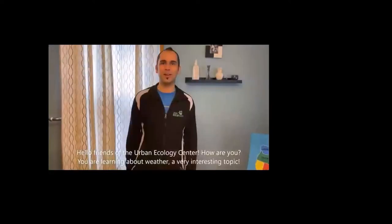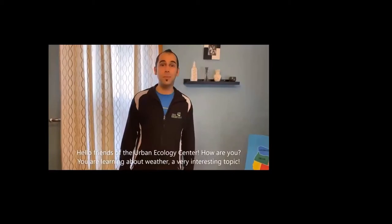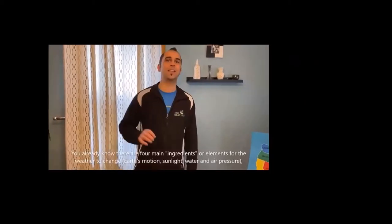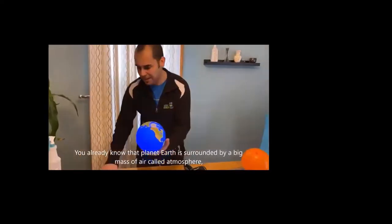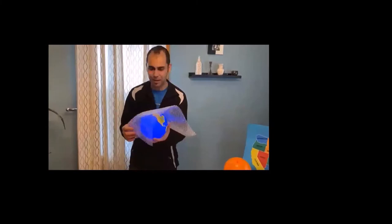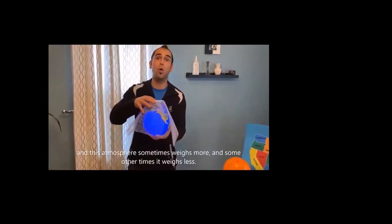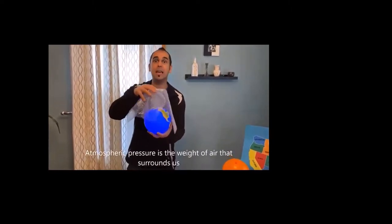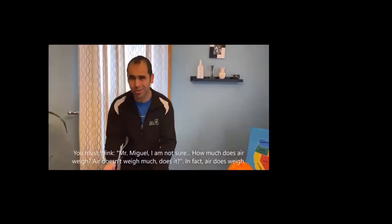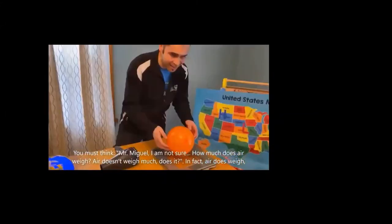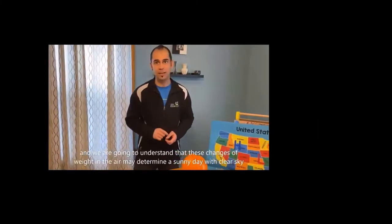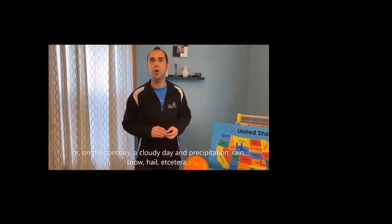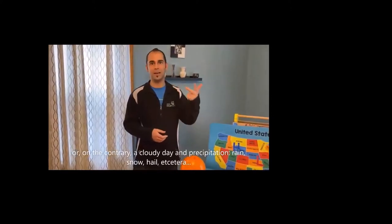Hi, friends of the Urban Ecology Center, how are you? I see you are learning about time, a very interesting topic. You already know that there are four important ingredients for time to change, and one very important thing is the atmospheric pressure. You know that the planet Earth has a mass of air called atmosphere, and that atmosphere in a few times weighs more or less. The atmospheric pressure is the weight of the air that we are around.